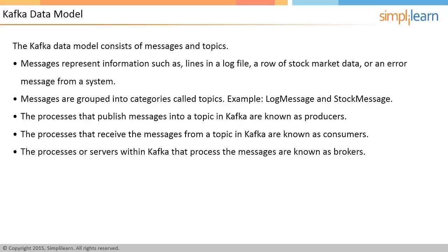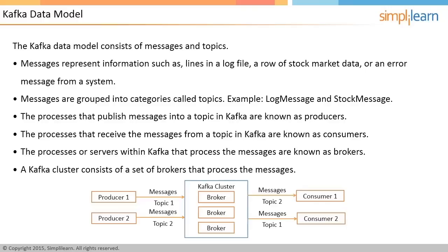A Kafka cluster consists of a set of brokers that process the messages. The image illustrates the Kafka data model showing a cluster of three brokers, two producers sending messages to the cluster, and two consumers receiving messages from the cluster. Producer one creates messages for topic one, whereas producer two sends messages for topic two. These messages are processed by the three brokers in parallel and sent to the consumers. Consumer one receives messages for topic two, and consumer two receives messages for topic one. The brokers handle receiving, storing, and forwarding messages to the interested consumers.